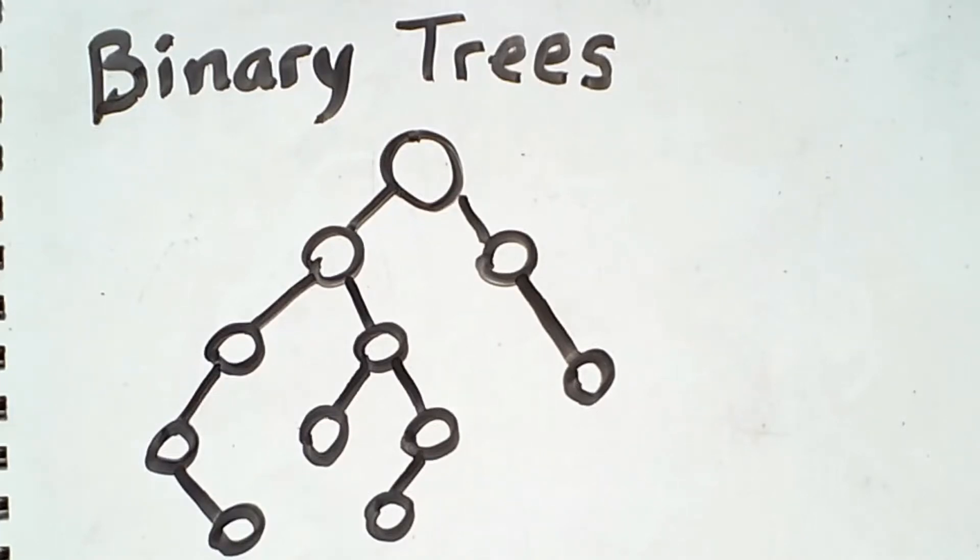A particular tree that is commonly seen in programming is a binary tree. A binary tree is simply a tree in which each node has at most two children.